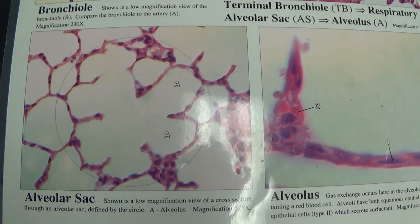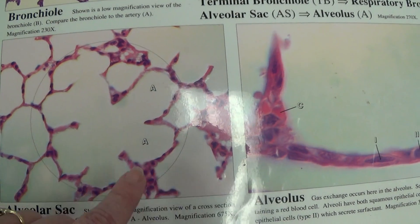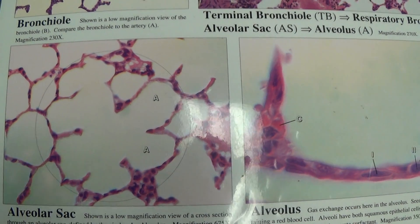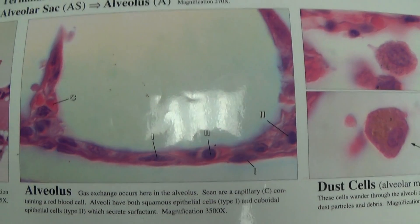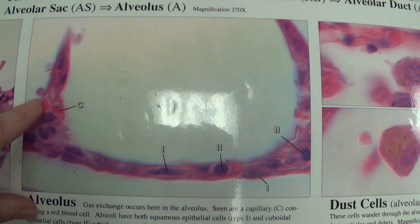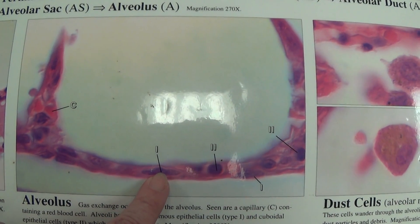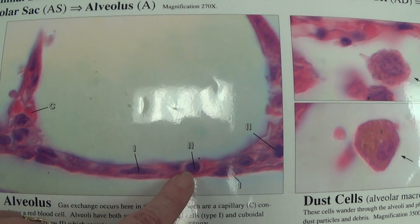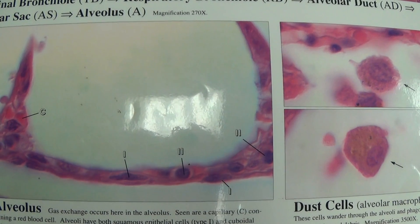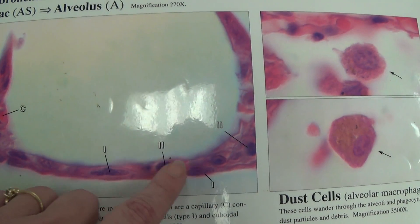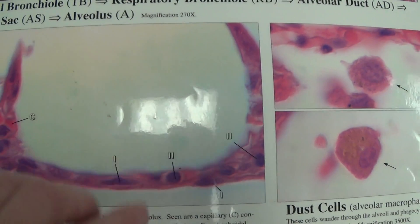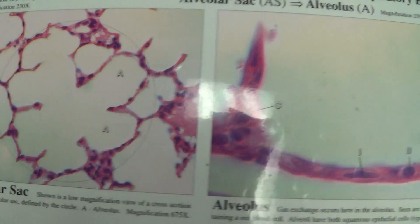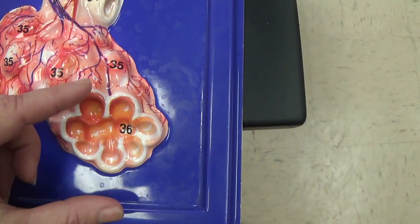Looking back over here, this is our alveolar sac, and we see a line around it with seven alveoli visible in this plane. If we look at an alveolus itself, they're showing us little capillaries. This is a type 1 simple squamous cell — it allows for easy gas exchange over a very thin membrane. This is a type 2 cuboidal epithelial cell that will secrete surfactant, and so is this one over here. This is an enlargement of one of those cells.